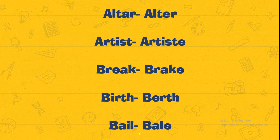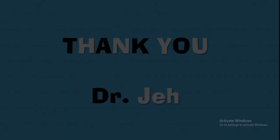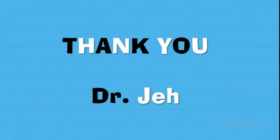So here we learned five word pairs. First: Altar (Havan ki Vedi) and Alter (to change). Second: Artist (related to art) and Artiste (a performer). Third: Break (verb — to break/todna) and Brake (noun — speed reducer in vehicles). Fourth: Birth (Janma) and Berth (sleeping place in train or ship). Fifth: Bail (Zamanat/Jameen) and Bale (Gattri/package). I hope you enjoyed this lecture. Thank you very much and stay tuned for more such videos.